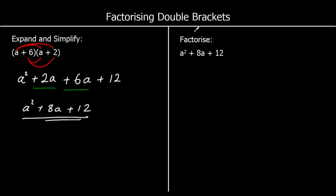The second question says factorize and starts with the answer. We're going to go back to what was previously the question. So the answer to factorizing a squared plus 8a plus 12 is (a+6)(a+2). How do we get there? We recognize that this pattern — an a squared term, an a term, and a number — goes into double brackets.